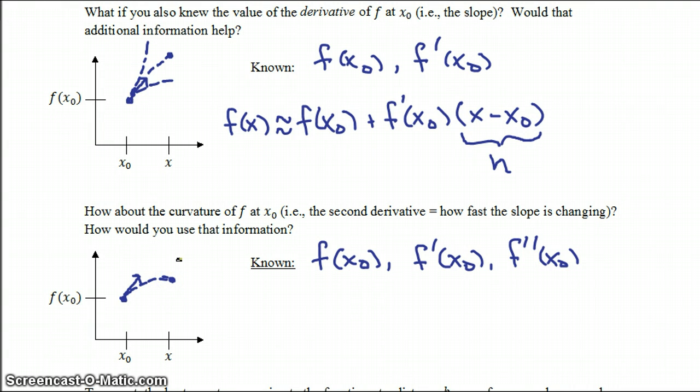That would be our new estimate of f of x. So f of x would be approximately equal to our initial estimate, plus the correction for knowing which direction we're going off in, plus another correction for how fast that direction is changing.